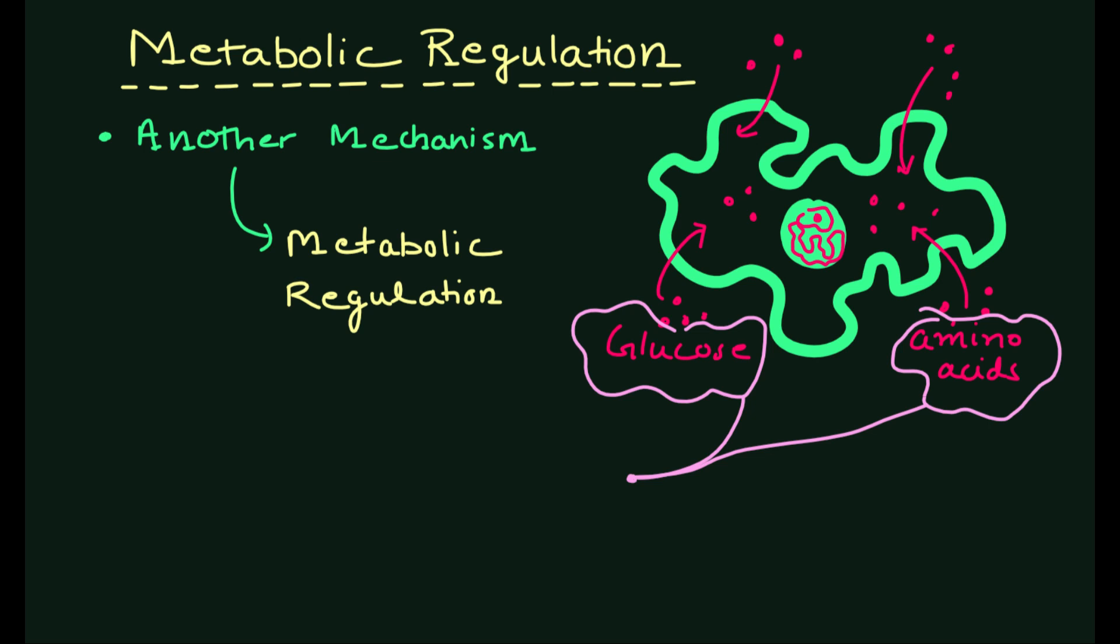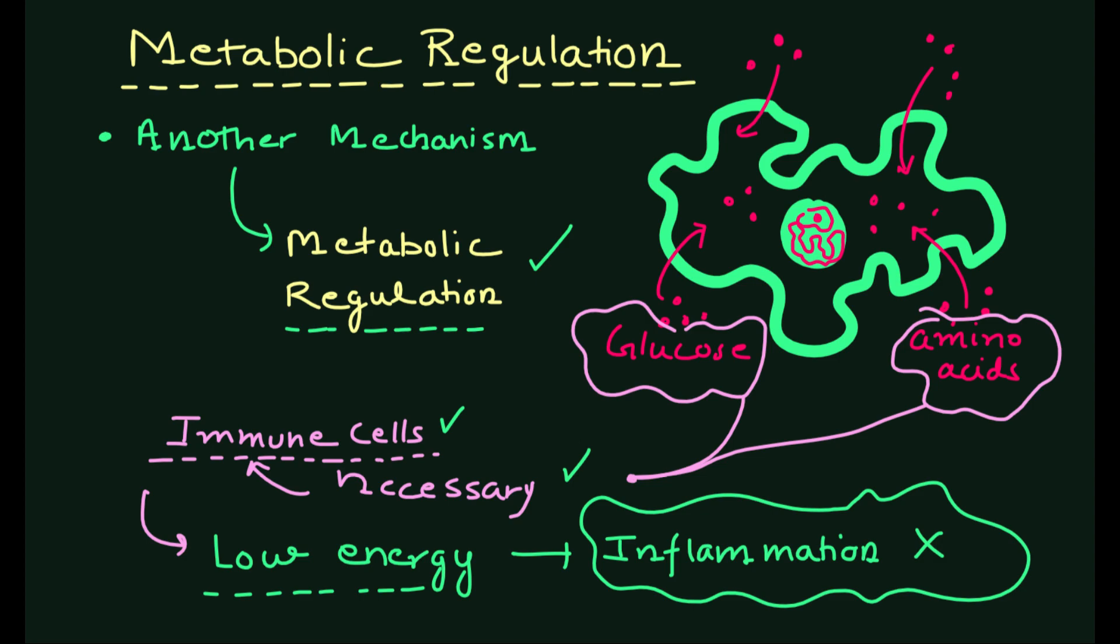Tregs can consume nutrients such as glucose and amino acids that are necessary for the activation of other immune cells. This deprives these cells of the energy they need to proliferate and cause inflammation.